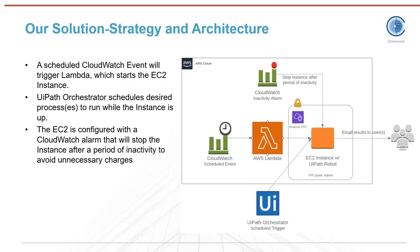The whole time that the EC2 instance is up and running, it's being monitored by a CloudWatch inactivity alarm. This is going to trigger the instance to be stopped after a certain period of inactivity to avoid unnecessary charges, because in AWS you're charged for every hour that the EC2 instance is running, so we don't want this running any longer than it needs to be.